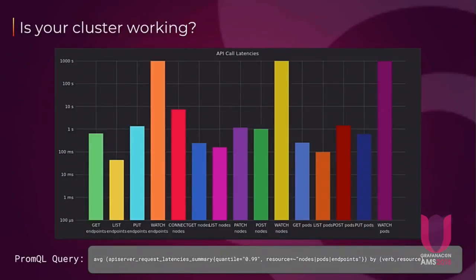The next one is a sample query to get API latency. These are all of the requests for the REST API that Kubernetes uses to deploy, remove, or watch all of the abstract resources. As you can see, this is on a log scale — you may be thinking that watch call takes 1,000-second latencies, but it's because it's an open connection, so that is expected.